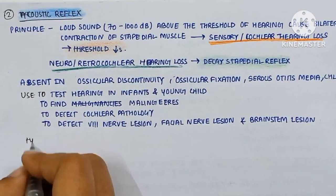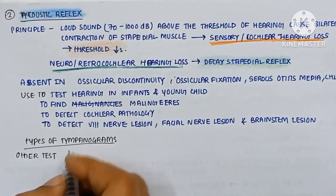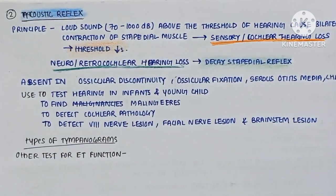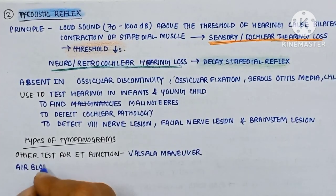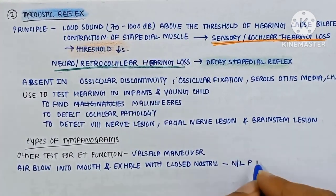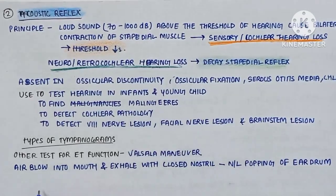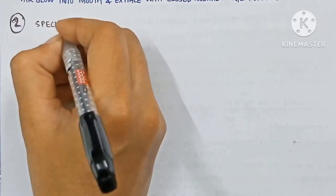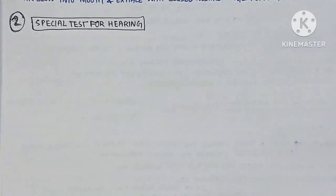Other tests for Eustachian tube function include the Valsalva maneuver, where air is blown into the mouth and exhaled with the nostrils closed — normal popping of the eardrum occurs.